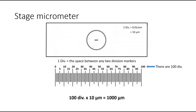If this micrometer has 100 divisions and each division is 10 micrometers in length, then we can simply multiply 100 divisions by 10 micrometers to get 1,000 micrometers total. So the distance between division marker zero and division marker 100 is equal to 1,000 micrometers. Remember these two key values: one division equals 10 micrometers, and since the micrometer has 100 divisions its total length is 1,000 micrometers. We're going to use these two pieces of information to assign a unit of length to each division of your ocular micrometer.